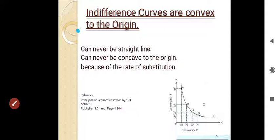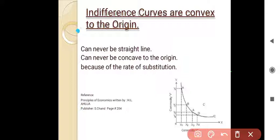Indifference curves are convex to the origin. This is the origin of the curve, so indifference curves are convex to it. They can never be a straight line and can never be concave to the origin, because of the diminishing marginal rate of substitution.